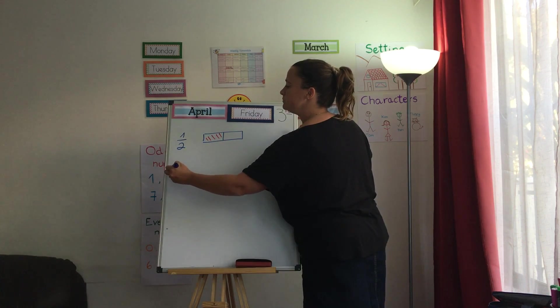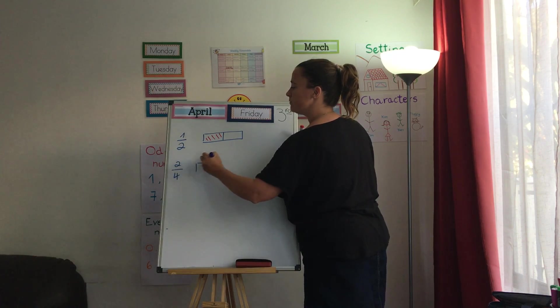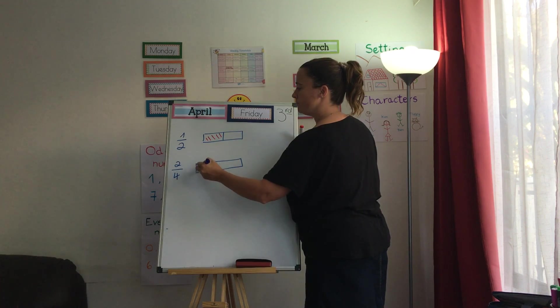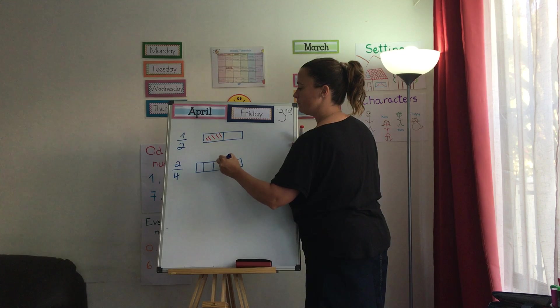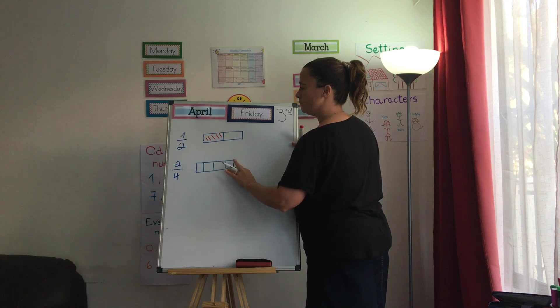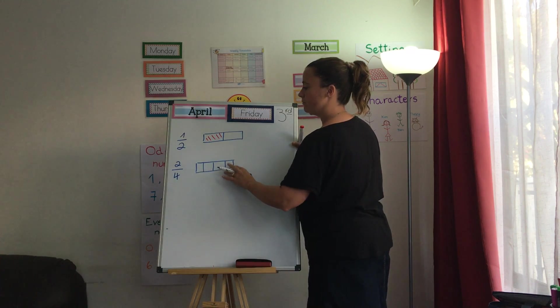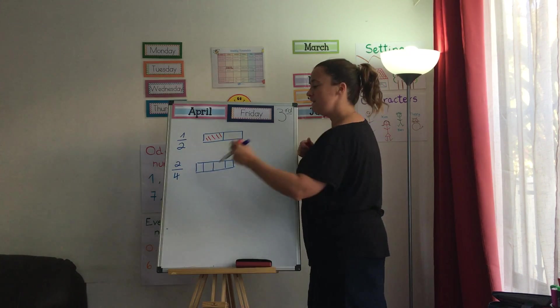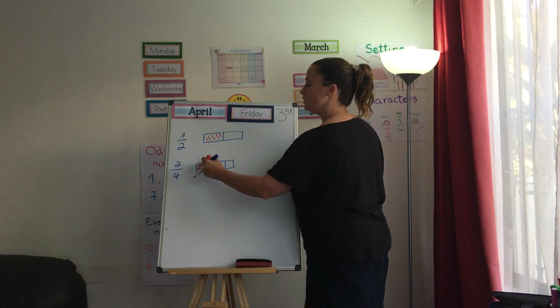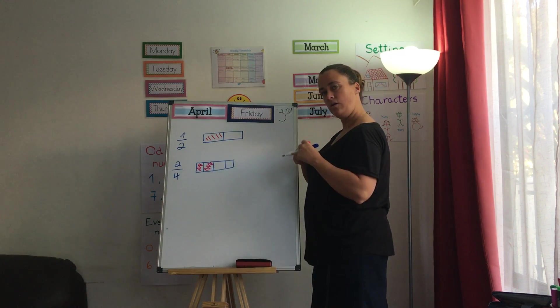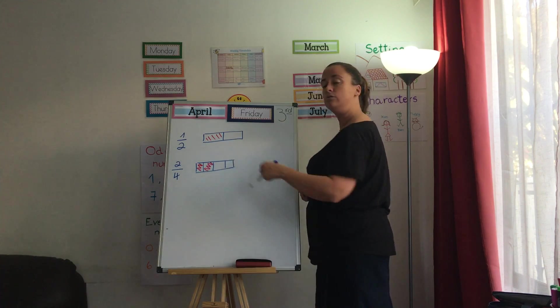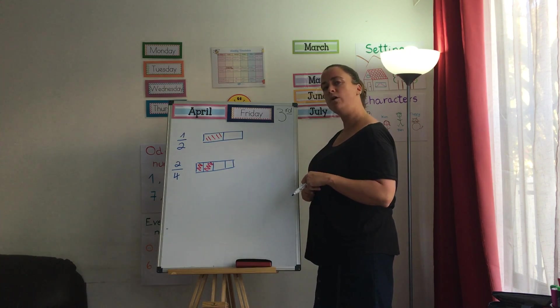If I've got this one. 1, 2, 3, 4. And I eat 2. How much of my chocolate do I have left? I've got 2. And 2 is the same as what? Half of my chocolate again.